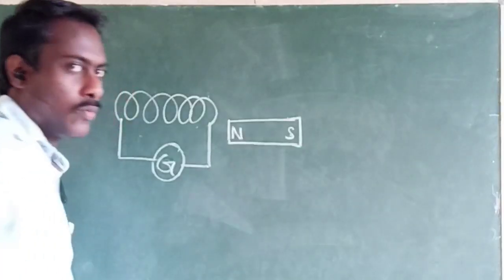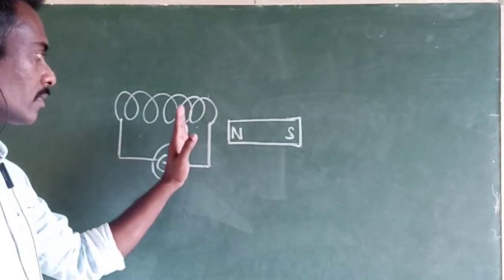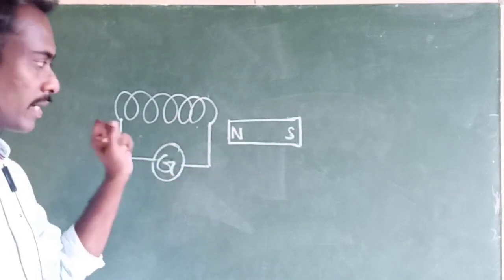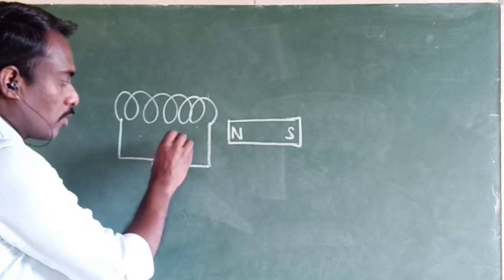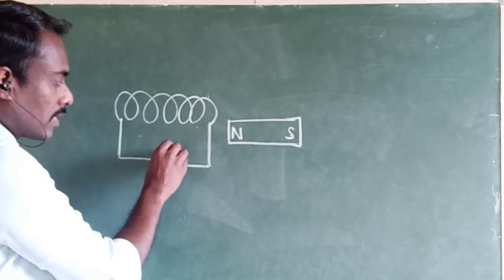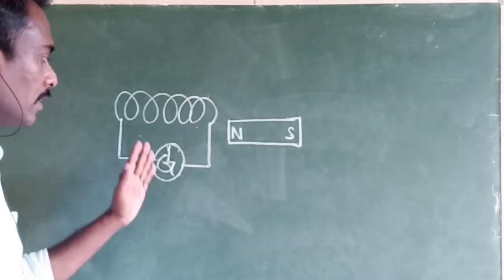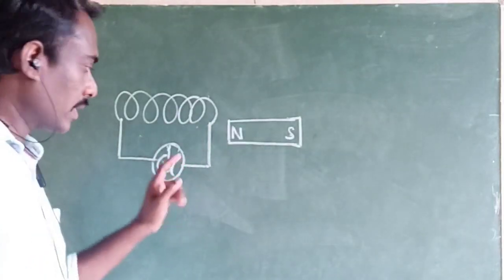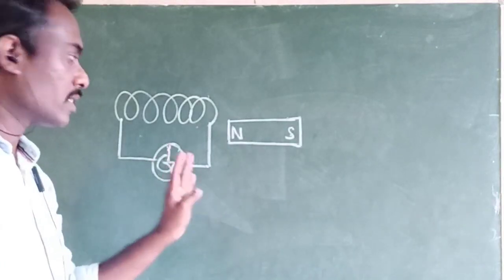Then take a magnet. This magnet is brought nearby the conductor — specifically, the north pole of the magnet is brought near the coil. What will happen? Suddenly we can find a deflection in the galvanometer. Before the magnet is brought near, the needle of the galvanometer points toward zero. When the north pole is brought near, the needle deflects to one side — say the right side.